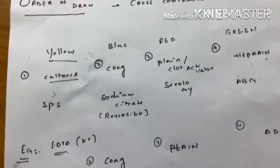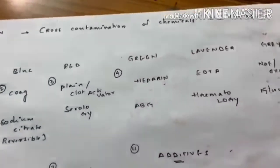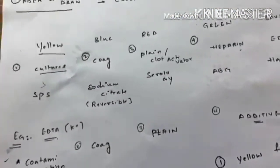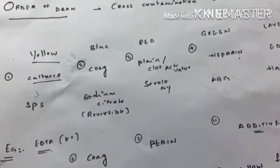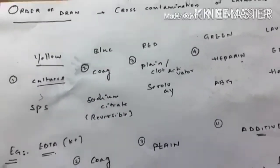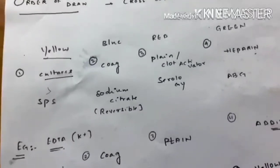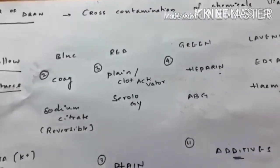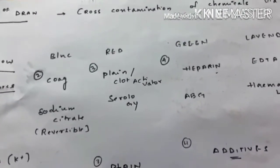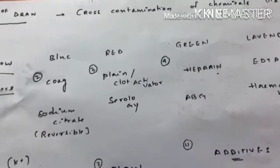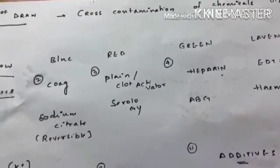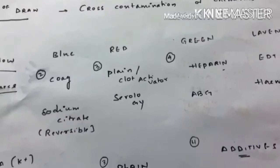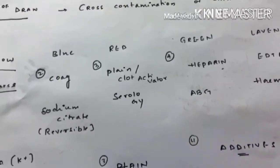The order of draw is yellow, blue, red, green, lavender and grey. How to remember this order? We all know that culture bottles should never be polluted. So we should always draw blood into yellow bottle first. Then blue, red. Why blue before red? We know that red contains clot activator, so this disturbs coagulation studies. To study coagulation studies without disturbance, we should always draw blood into blue before we draw into red.